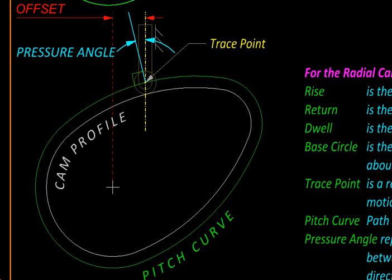Finally, some definitions related to the follower. A point that represents the follower is called as a trace point. This could be the tip of a knife edge follower or it could be the center of roller for a roller follower. The path traced by the trace point around the cam profile or relative to cam profile is called as the pitch curve.